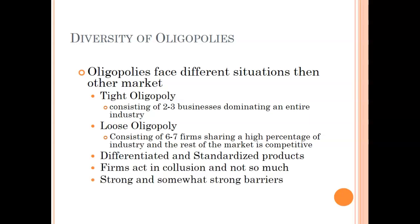They can have differentiated or standardized products. The firms can act in collusion or not so much depending on the relationship. Or because of game theory, they could look like they're even acting as if they're in collusion. There's sometimes strong and somewhat strong barriers to entry, hence the loose and the tight oligopolies. Essentially, it doesn't fit into one model. So depending on the overlying circumstances, you might see some different aspects happening.